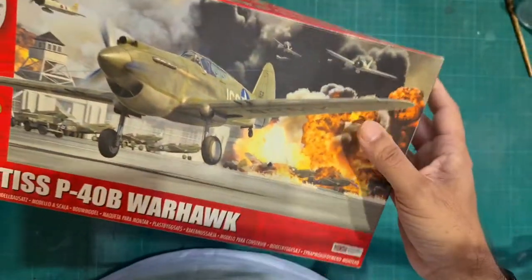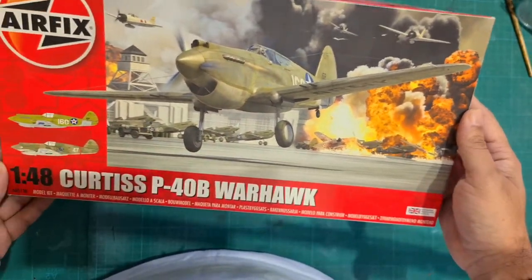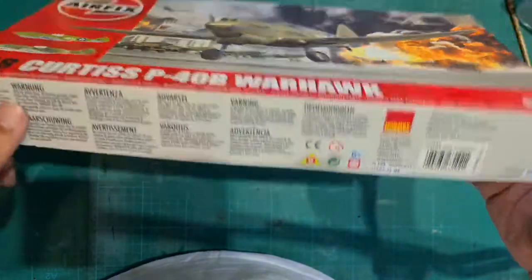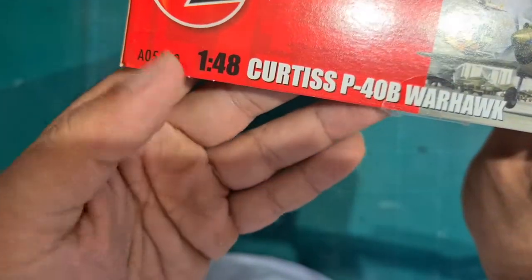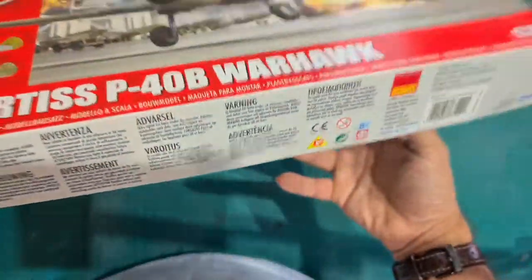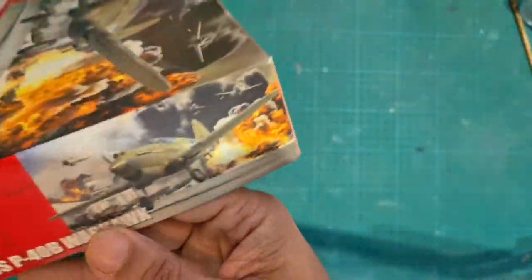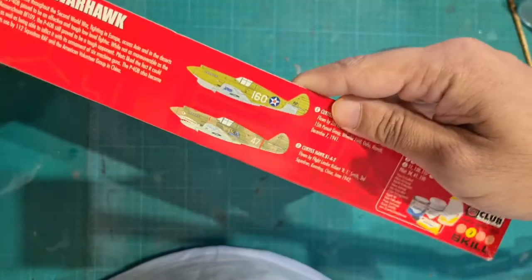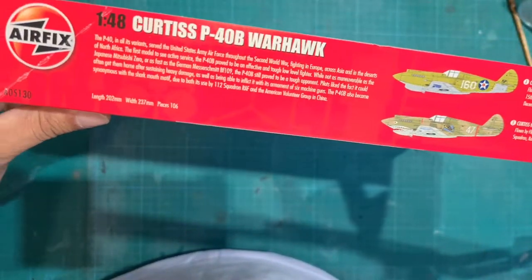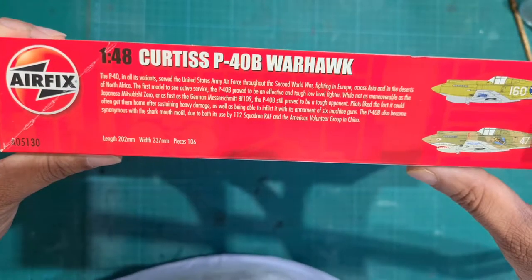Very quick look at the box art first. Really nice box art. Two marking options. Kit number is A05130. Just to look at those marking options again and a little more about the kit.